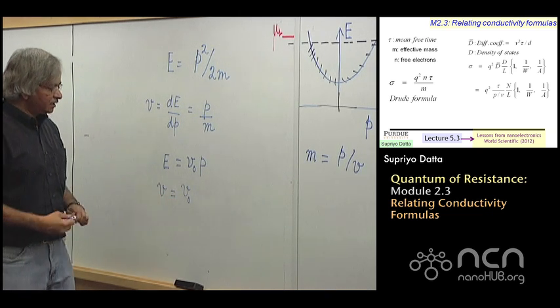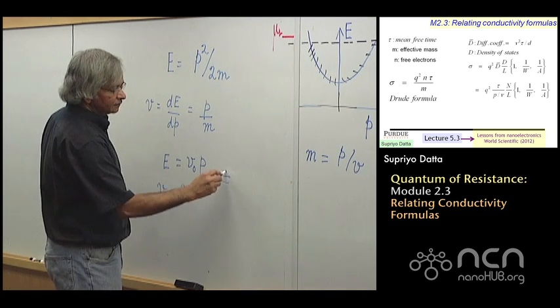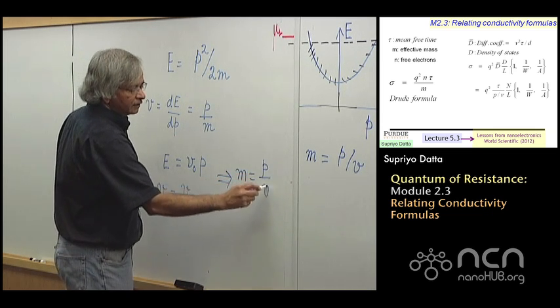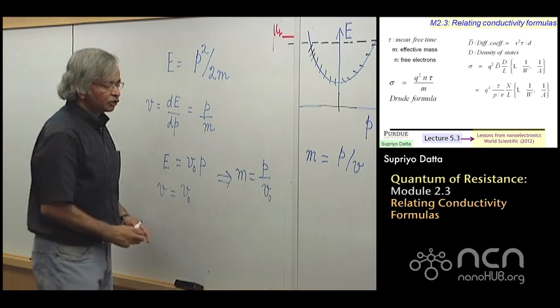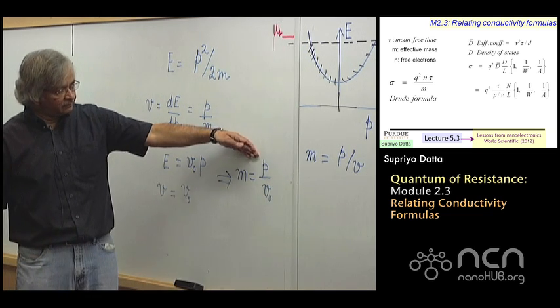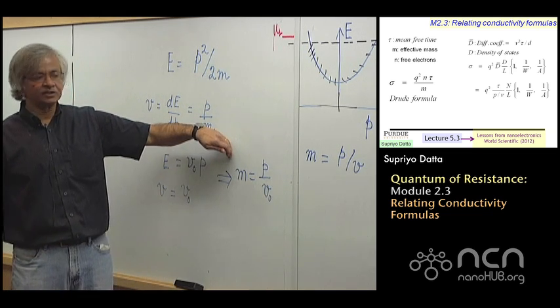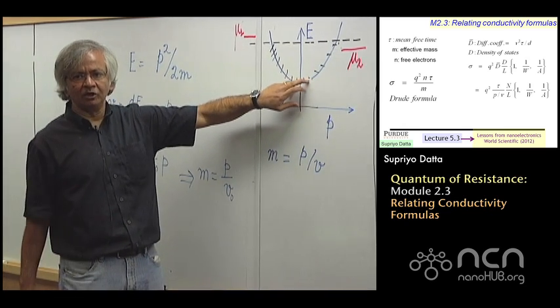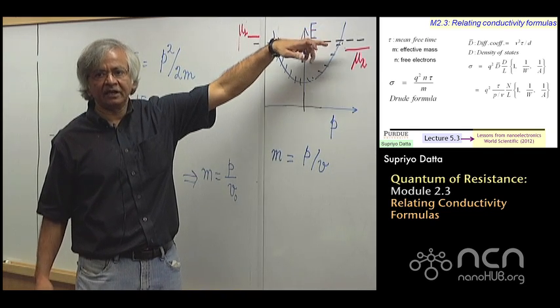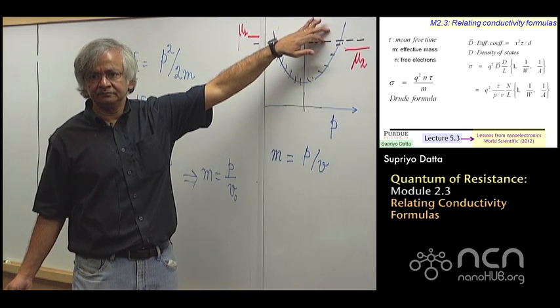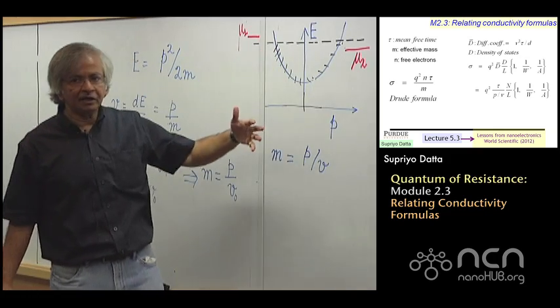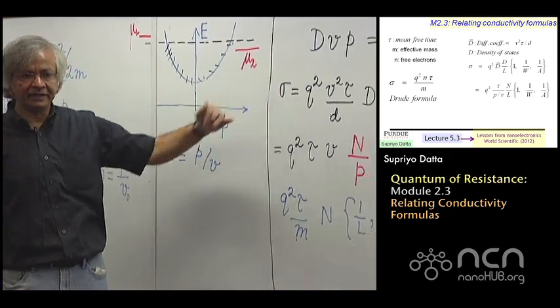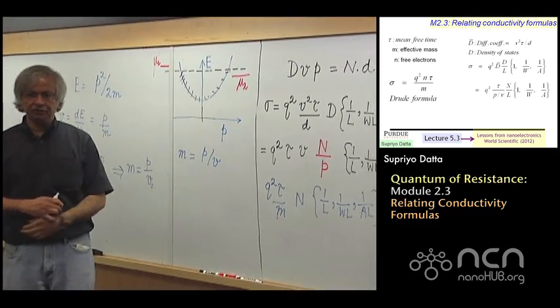So what that means is, that if I looked at the mass, it would be p over v. The v is a constant, and so the more the momentum, bigger the mass. So it is almost as if electrons here with less momentum have a small mass, and electrons, when they go up there, they have a much bigger mass. You see? And this leads to unusual properties when you try to look at the conductivity. And that is kind of what we will talk about in the next module a little more.